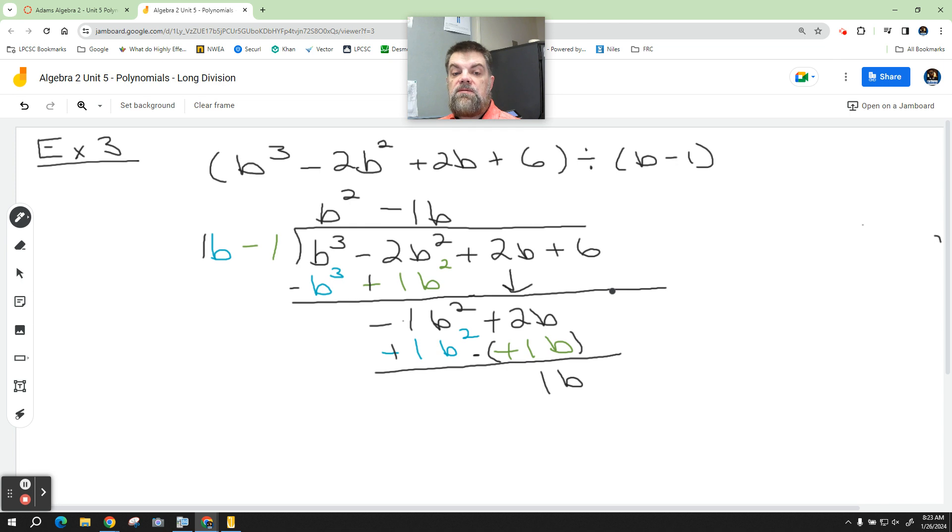Now what do you think we do? We're going to drop the 6 down. What kind of 6? A positive 6. We're probably going to have a remainder, guys. But that's okay. We know what to do with remainders, right? So then I've got to think to myself, okay, back to the drawing board. What do I multiply 1b by to get 1b? Just a positive 1. So we're just going to say plus 1 here. So then we multiply it through.